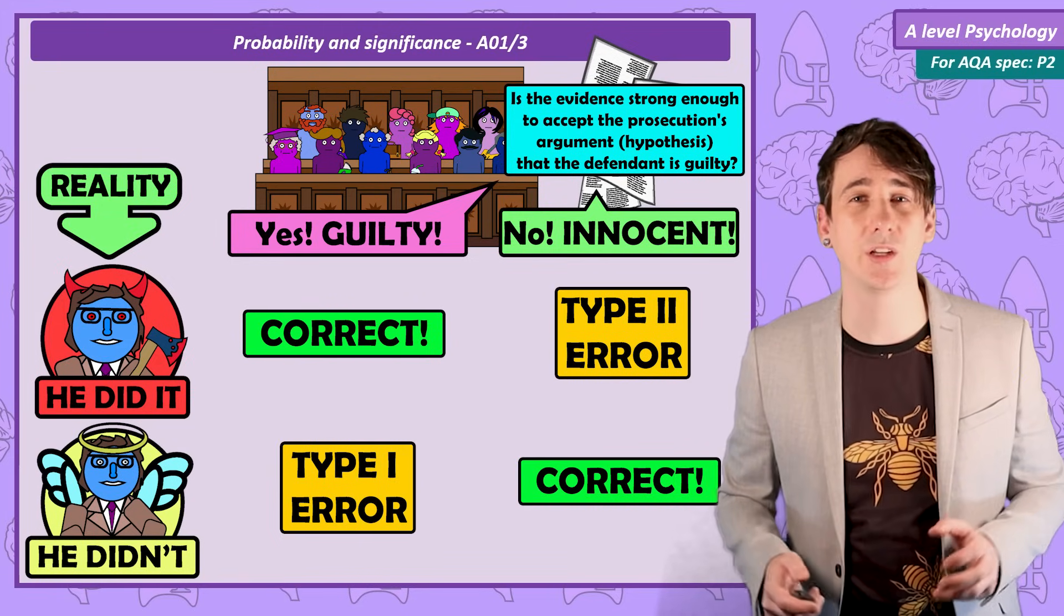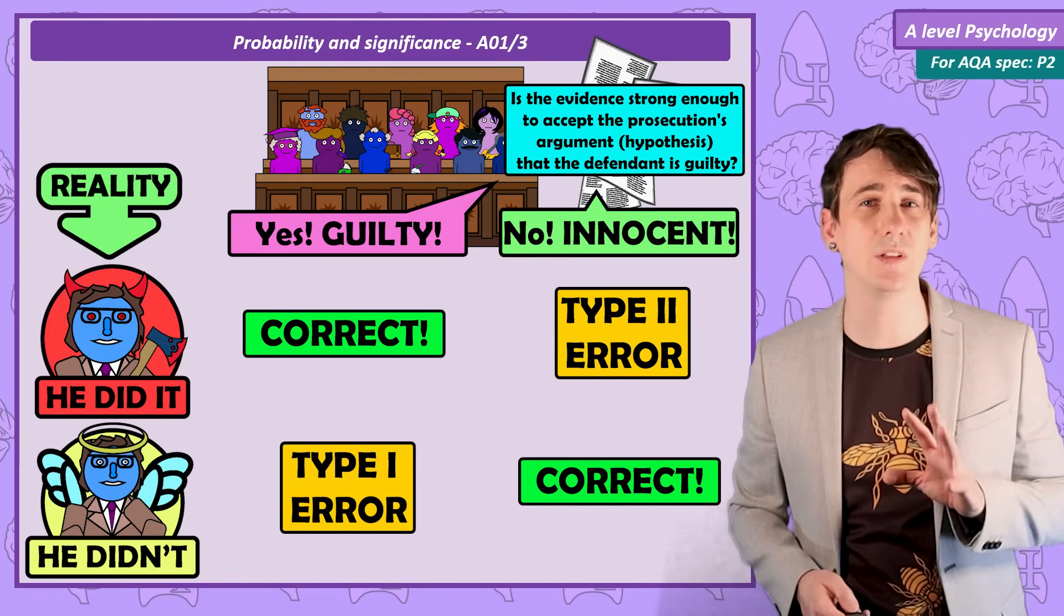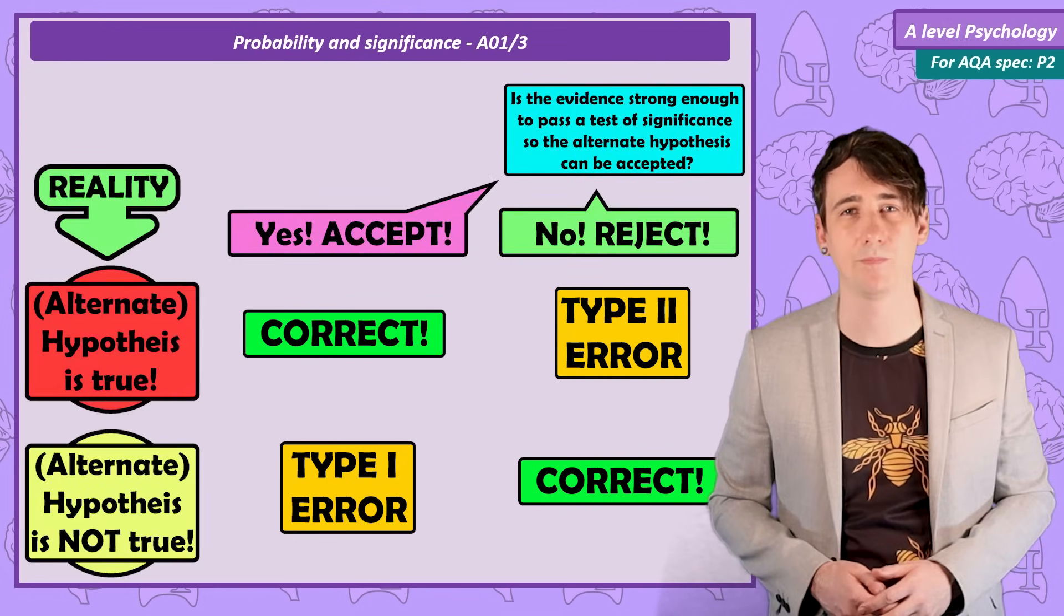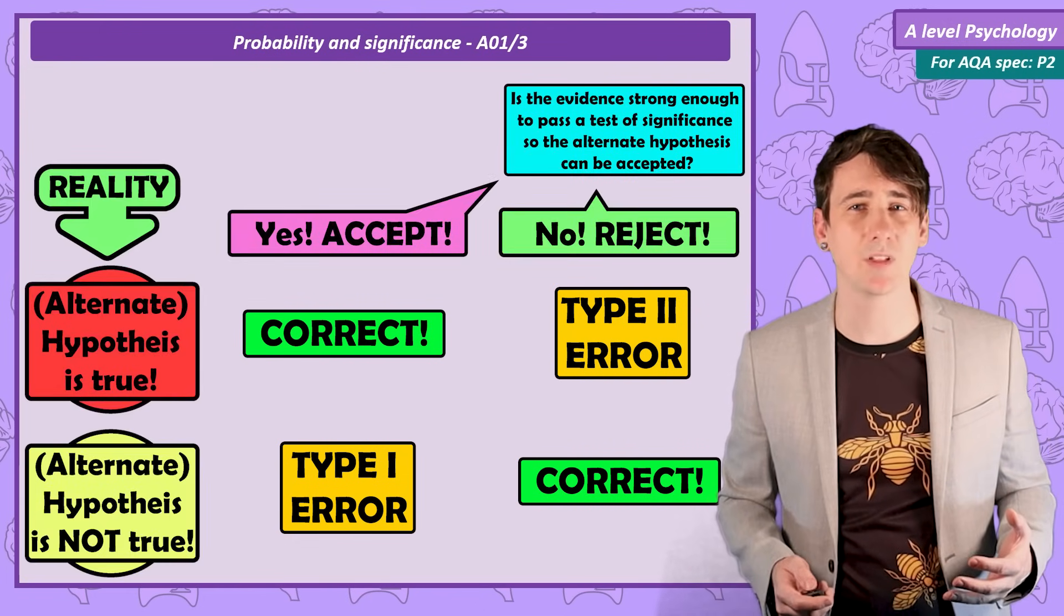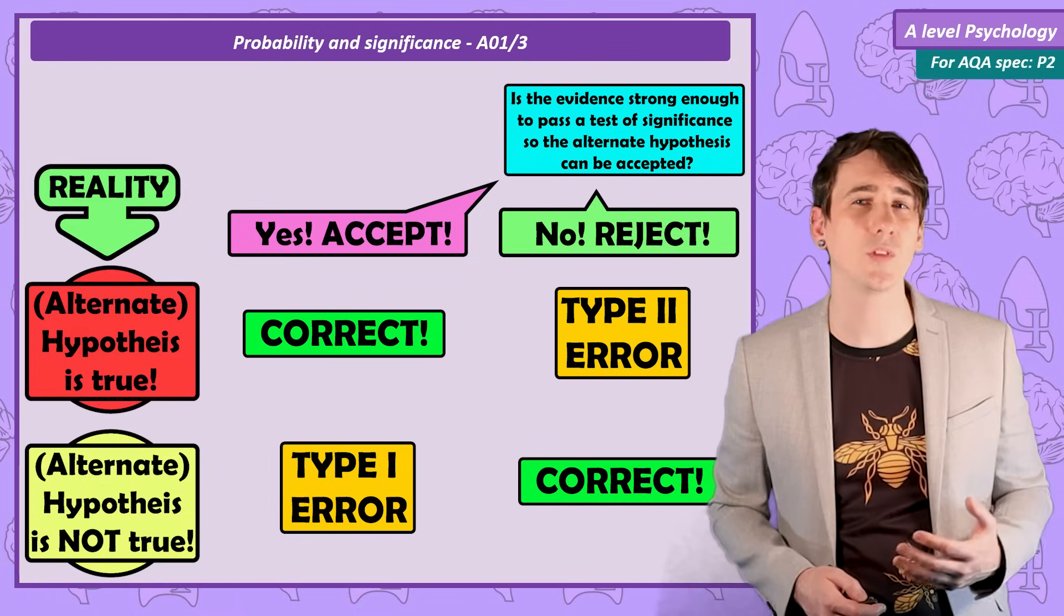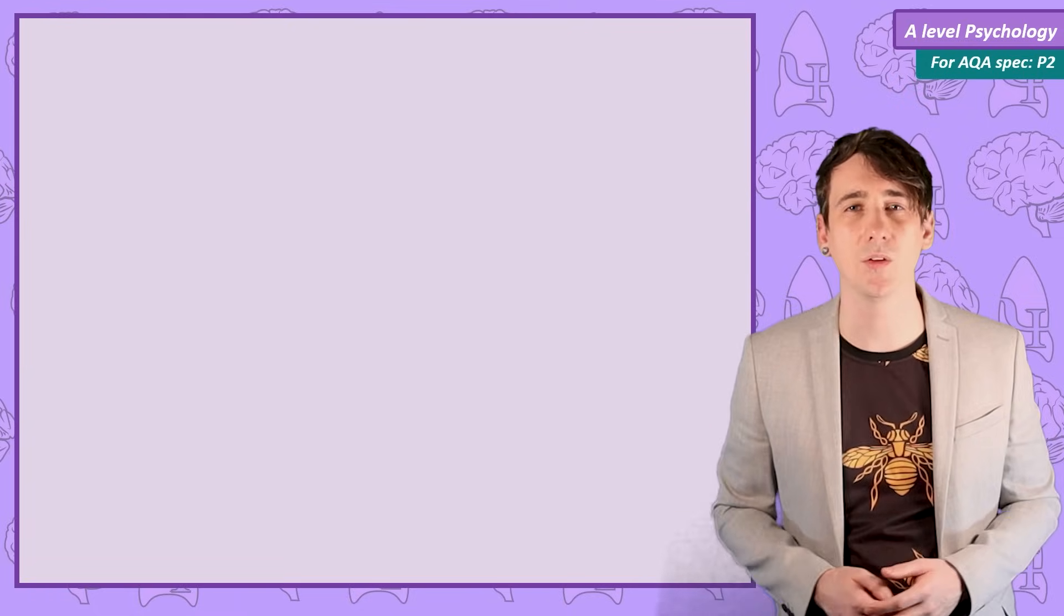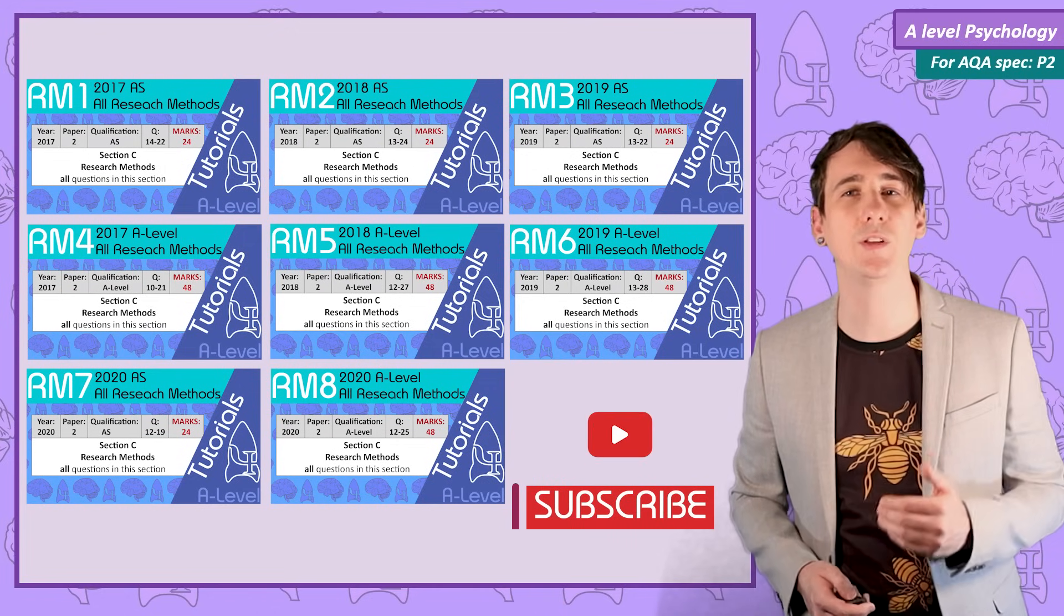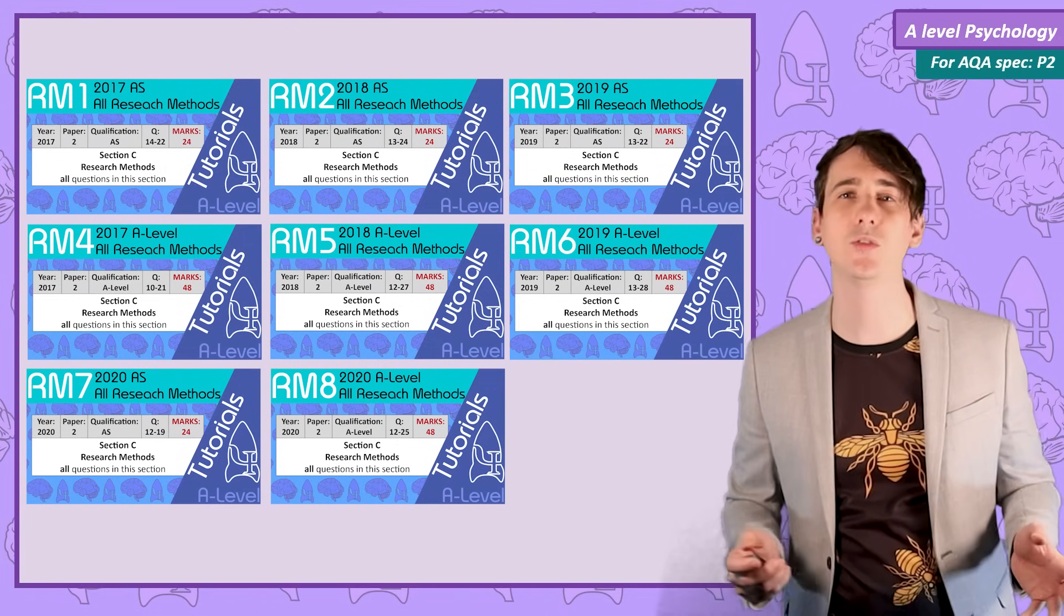Probability and significance is a tricky topic. I think it's one of the most difficult concepts for students to understand in all of psychology A-level. So if you're struggling, try to watch this video again a couple of times, come up with your own scenarios for type 1 and 2 errors and then have a go at some past papers. I have 8 tutorial videos covering the AS and A-level research methods sections from 2017 to 2020.